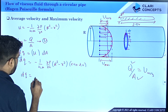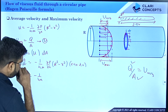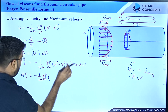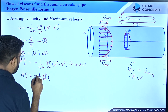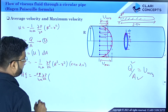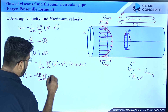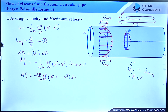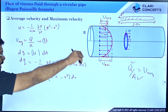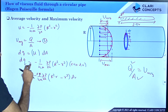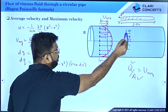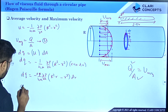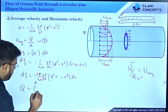Now I will manipulate the expression. Taking constants out: dQ = −(1/4μ)(∂P/∂x)(R² − r²) × 2πr dr. Expanding the bracket: dQ = −(2π/4μ)(∂P/∂x) × (R²r − r³) dr. To get total flow rate Q, I integrate from 0 to R: Q = ∫₀ᴿ dQ.